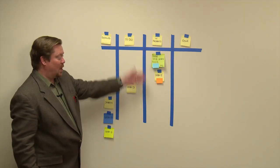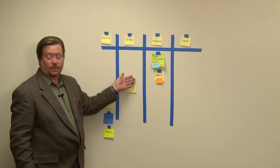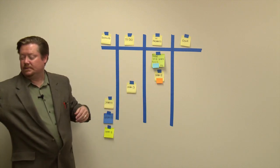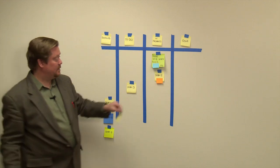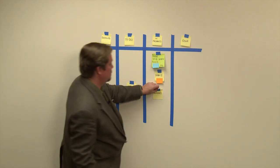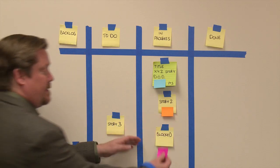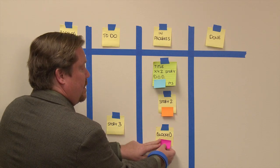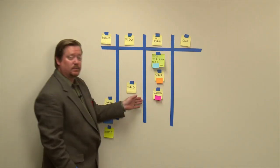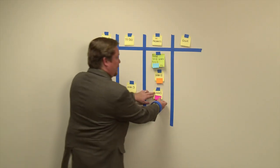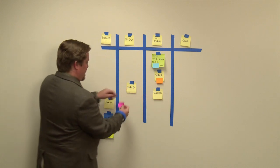Stories can get blocked. You can use a special flag to indicate blocked stories. This is a blocked story, and there's your flag that tells everyone that story is blocked. When this story is unblocked, simply remove the flag.